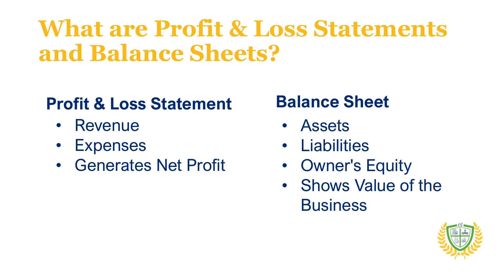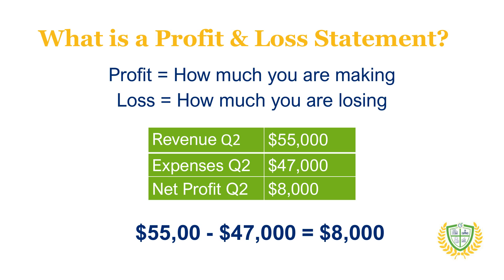In its most basic form, the profit and loss statement shows the profitability of the business for a set time period. The time period can be for the year, quarter, month, or even a day — whatever you need. Profit is how much you are making from the business; loss is how much you are losing. You calculate the profit or loss by taking all the revenue — which is how much you took into the business in that period — and subtracting the expenses. The result is either a profit when your revenue exceeds your expenses, or a loss when your expenses exceed your revenue.